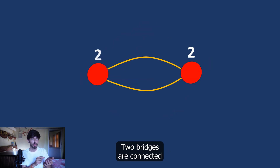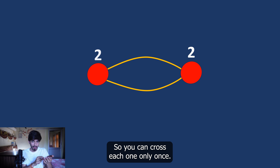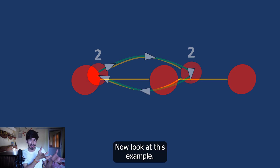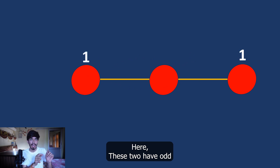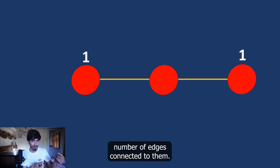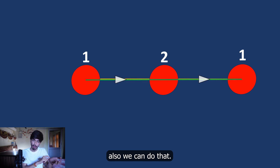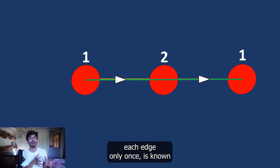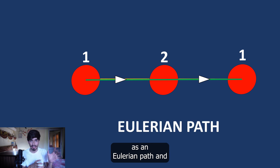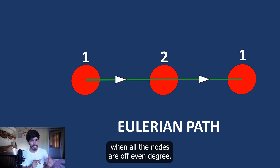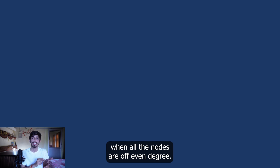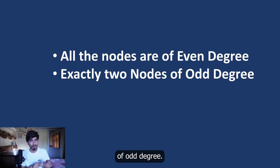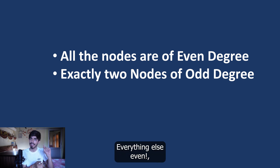For example, in one case, two bridges are connected to each node, so you can cross each one only once. In another example, two nodes have an odd number of edges and one has even — and we can still do that. This path which crosses each edge only once is now known as an Eulerian path. It is only possible when all nodes are of even degree, or there are exactly two nodes of odd degree with everything else even.